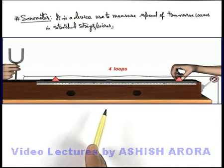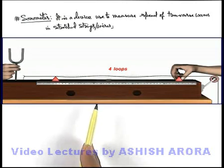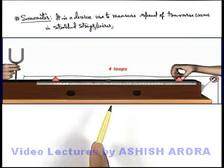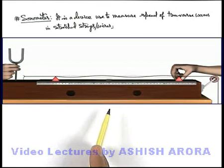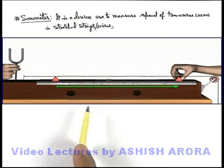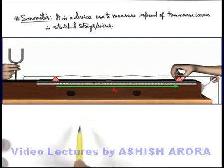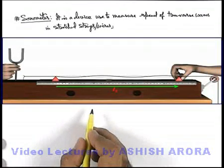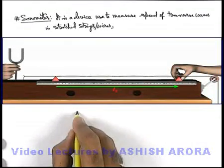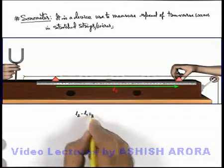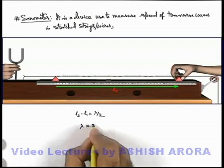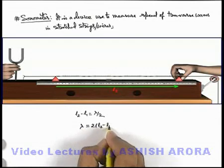So here you can state the clamp C2 is displaced to such a position where another node can be obtained. That's why now the string is oscillating in 4 loops. Say this resonating length is L2. Then we can directly write as the displacement of clamp C2 is from one node to another node. Here we can directly write L2 minus L1 is equal to lambda by 2, which gives us the wavelength experimentally, twice of L2 minus L1.